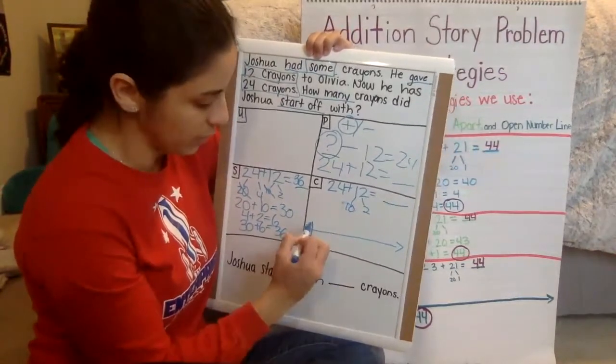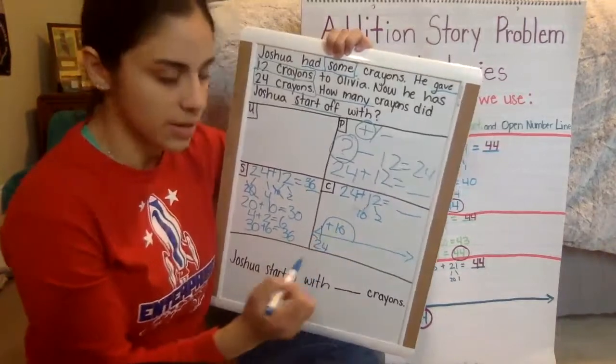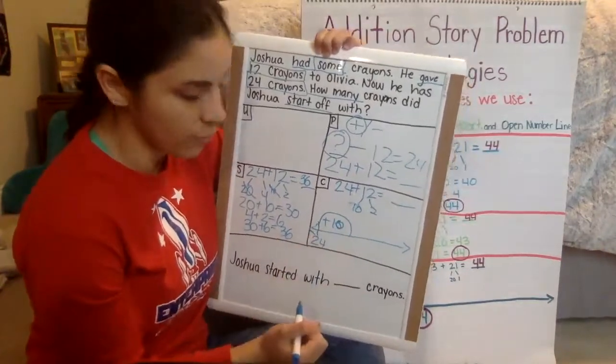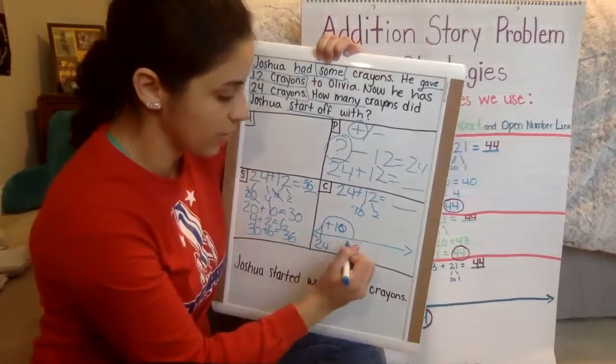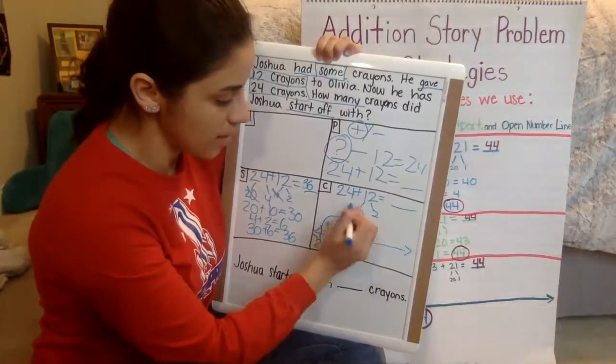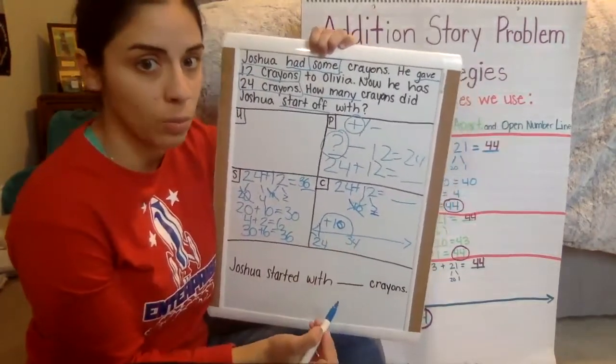Now, 24 plus 10 will be 34. Cross that out. We're not done yet. We still have to add the ones.